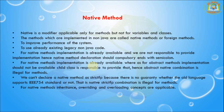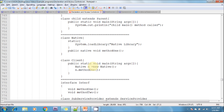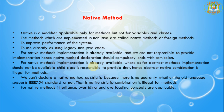For native methods, the implementation is already available, whereas for abstract methods the implementation should not be available — child classes are responsible to provide that. Hence, abstract and native combinations are illegal for methods.